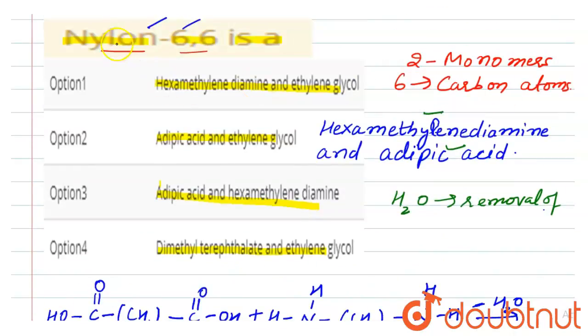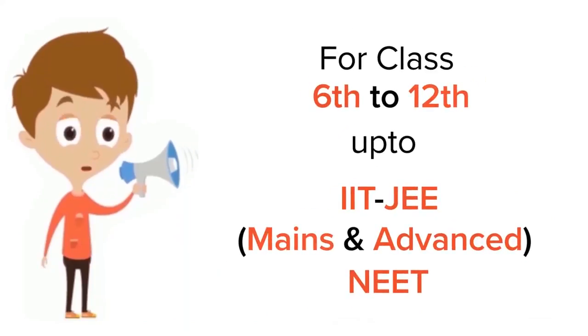First is hexamethylenediamine and ethylene glycol, so this is incorrect because it is hexamethylenediamine and adipic acid. So the second option is incorrect. Third option is correct here, and fourth option is also incorrect. So here, option third is our correct option.